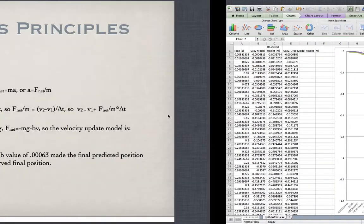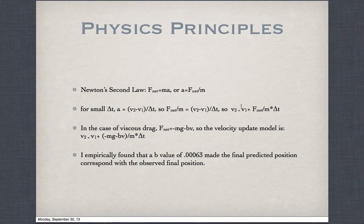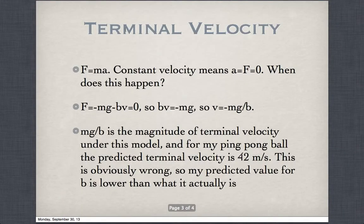The only thing that differs in the gravity-only and drag models is the concept of terminal velocity. Terminal velocity is an aspect of a model with drag, a consequence of F equals ma. Terminal velocity is when the forces cancel between drag and gravity, so net force is zero and you've reached constant velocity. Constant velocity means acceleration equals net force equals zero.